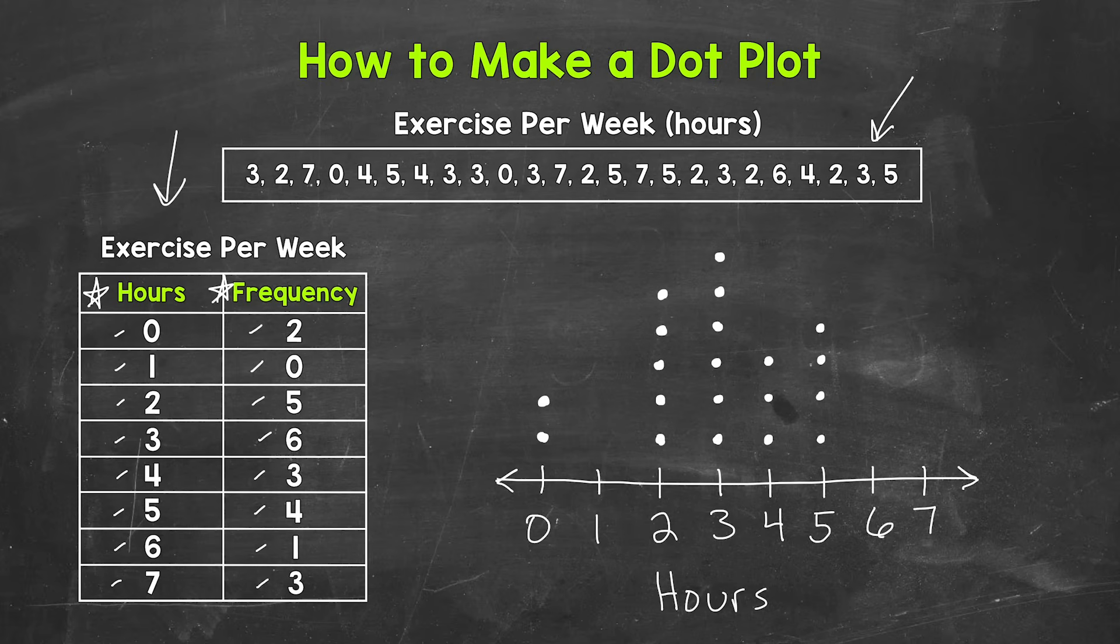Next, we have six hours, which we have one person, so one dot above six. And then lastly, seven hours of exercise, we have three people, so three dots above seven. One, two, three.